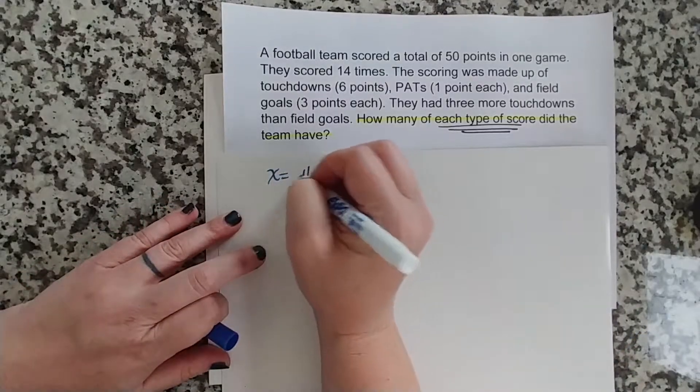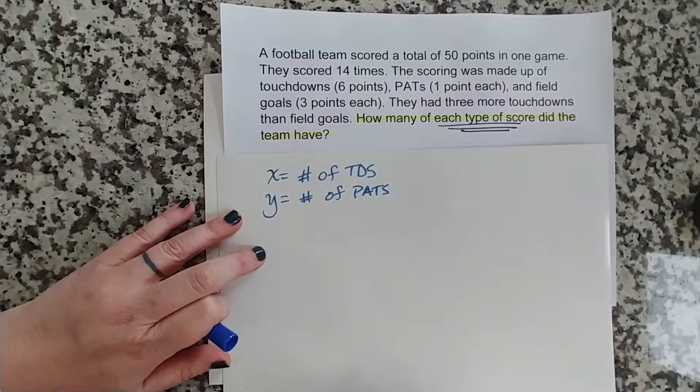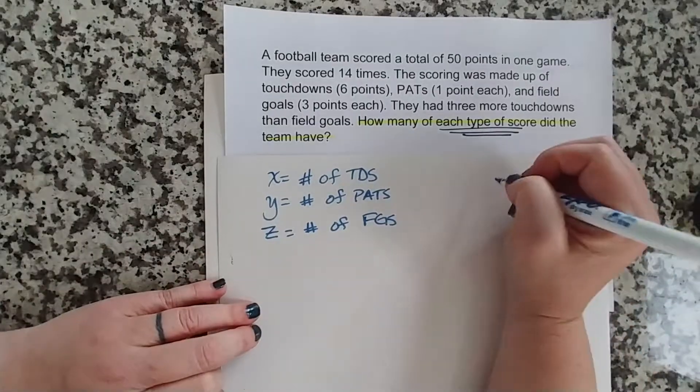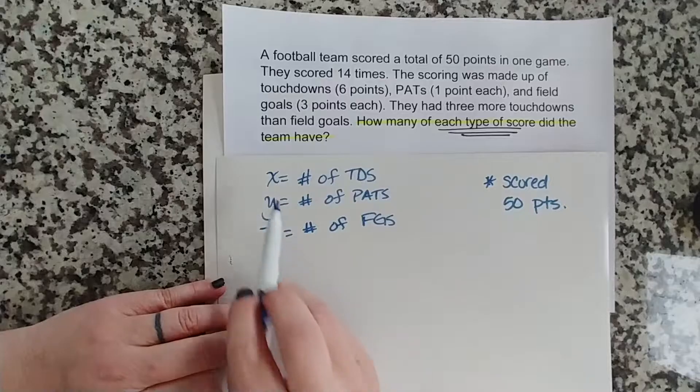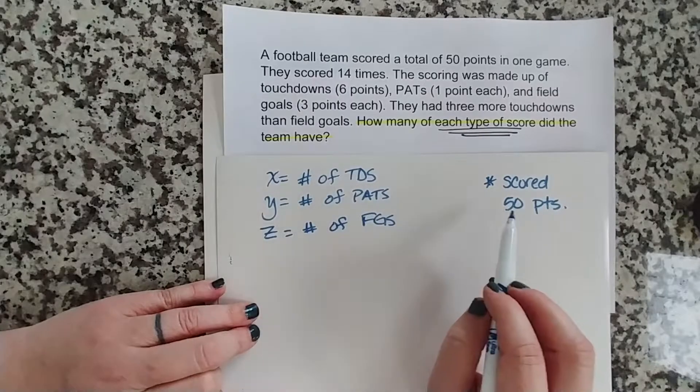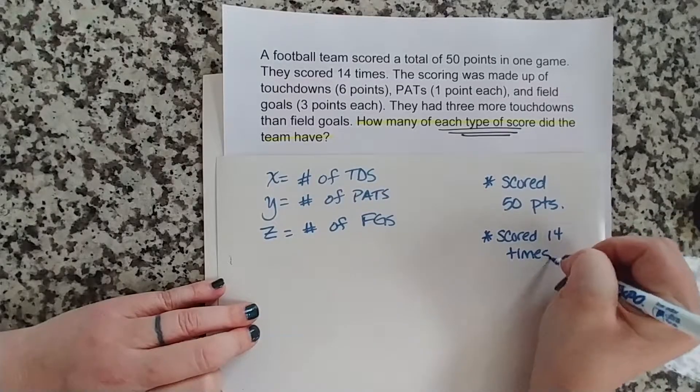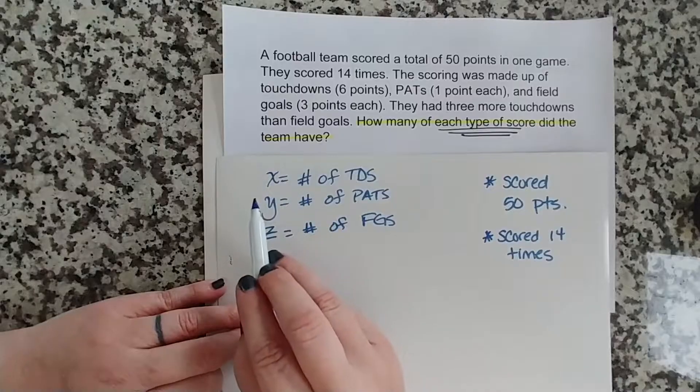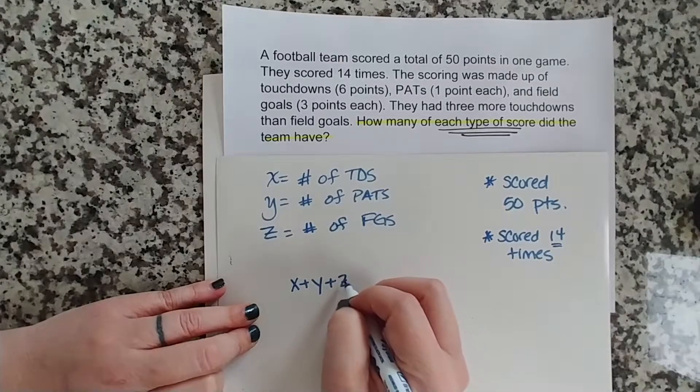All right, so let's look at what we have. We know that we're going to let X equal the number of TDs, Y equal the number of PATs, and Z equal the number of field goals. Okay, so here's the information we have. We know that they scored 50 points. Okay, that's not going to be X plus Y plus Z equals 50, because X, Y, and Z are all worth different number of points. X touchdowns are worth 6, PATs are worth 1, field goals are worth 3. So that's not going to work. We're going to save that information for later. We also know that they scored 14 times. Now that will work. So they scored one of these things 14 times. So that gives us our first equation: X plus Y plus Z equals 14.